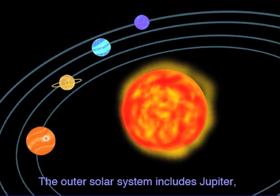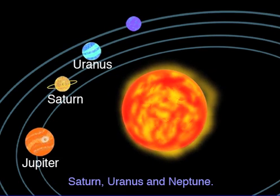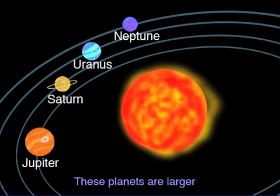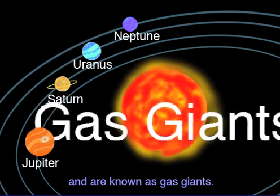The outer solar system includes Jupiter, Saturn, Uranus, and Neptune. These planets are larger and are known as gas giants.